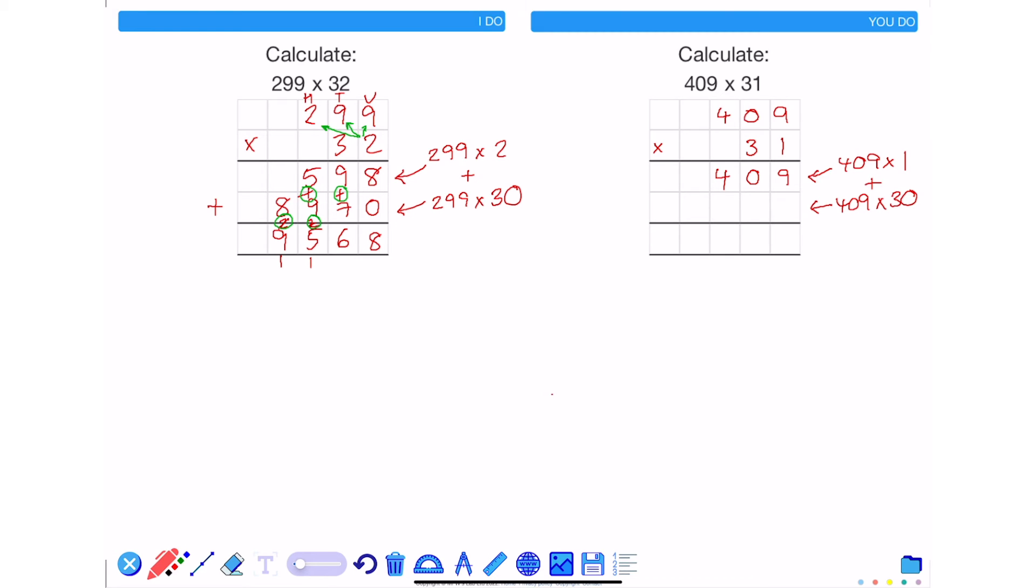Remembering to place a 0 in the first column of the second row because the 3 is in the tens column and it will have 0 units. 3 times 9 is 27. 3 times 0 add on the 2 is 2. And 3 times 4 is 12.